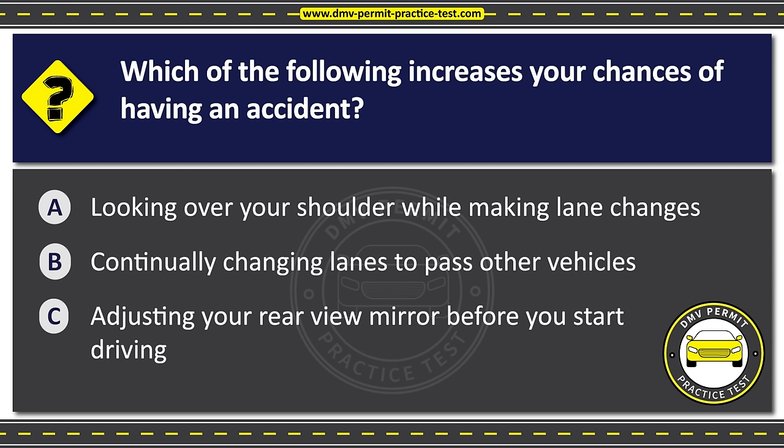Question twenty-three. When you park on a level road next to a curb, Option A: Your wheels must be within 18 inches of the curb. Option B: Your front wheels must be turned towards the side of the road. Option C: You do not have to set your parking brake. The correct answer is Option A: Your wheels must be within 18 inches of the curb.